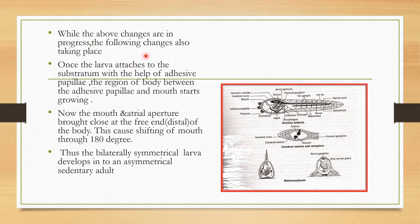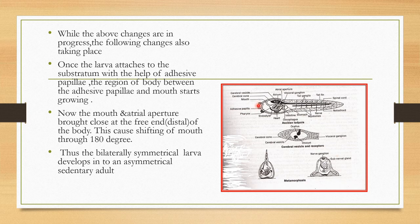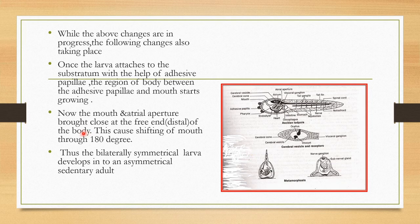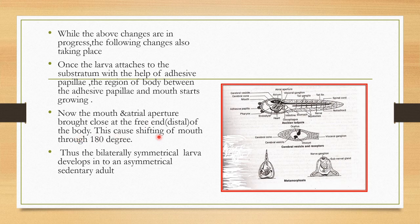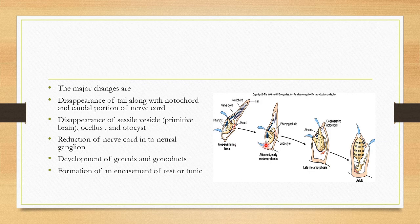During these changes, one important character also happens. Once the larva attaches to the substratum with the help of these adhesive papillae, this is the papillae, the mouth and atrial apertures are brought close at the free end of the body. This causes shifting of the mouth through 180 degrees. So this is the position of the mouth, right? And this is the adhesive papillae.